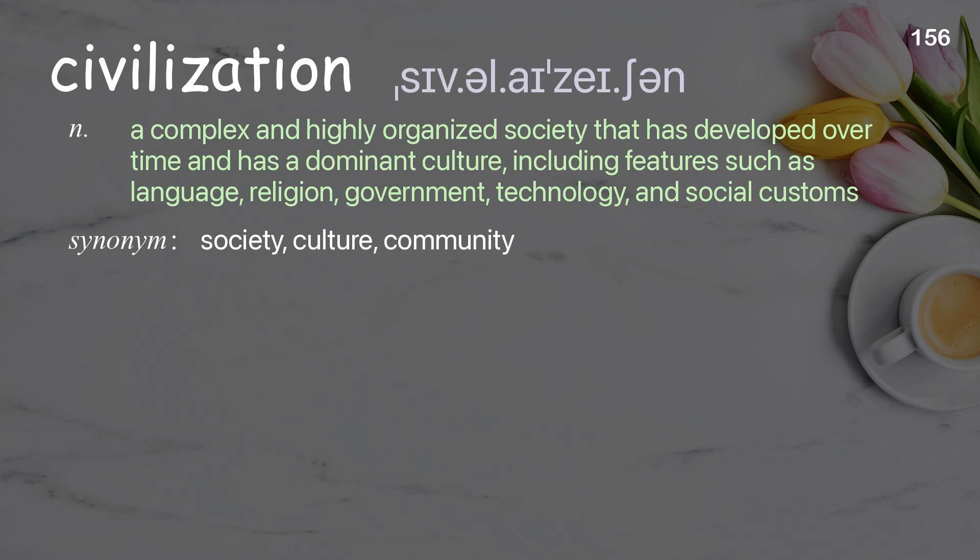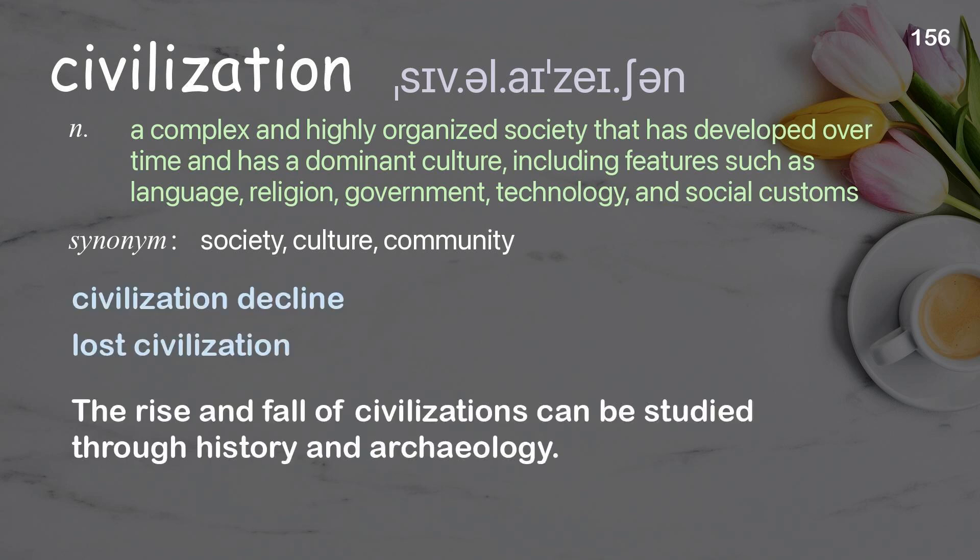Civilization: a complex and highly organized society that has developed over time and has a dominant culture, including features such as language, religion, government, technology, and social customs. Examples: civilization decline. The rise and fall of civilizations can be studied through history and archaeology.